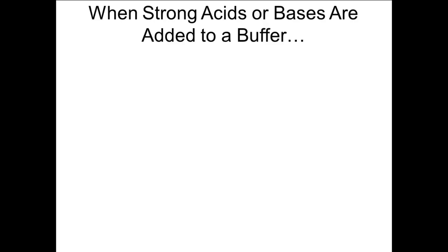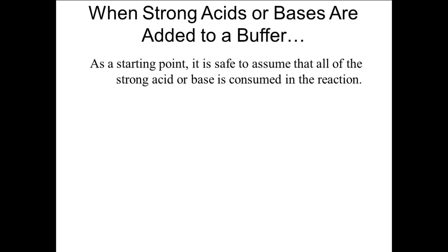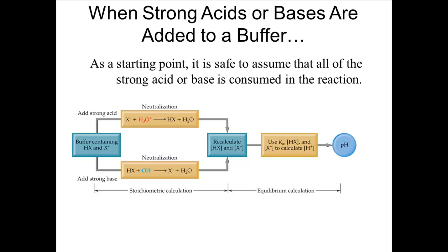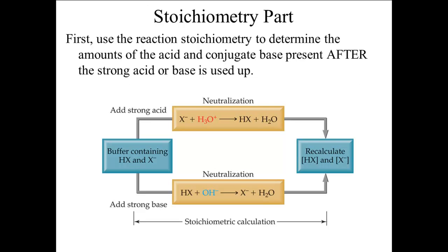Now that we know how to determine the pH of a buffer solution, the next question is: what happens when we add some strong acid or strong base? As a starting point, it is safe to assume that, as long as we do not add too much, all of the added strong acid or strong base is consumed in the reaction. This leads to a two-part process: the first part is a stoichiometry part, where we figure out the new initial concentrations of the acid and conjugate base, and the second is a new equilibrium calculation.